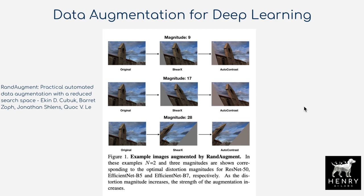Data augmentation transforms original data points x into x-prime sharing the original label y. This is common in images because it's easy to define label-preserving transformations — shearing, auto-contrast, brightness adjustments on a church image in the Google Landmarks competition still preserve the semantic class label, whether for cats vs. dogs or product search in image classification.